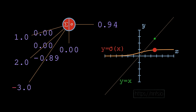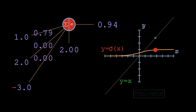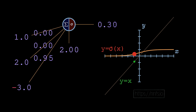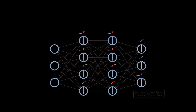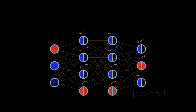Why does granularity matter? The next steps are to calculate loss — how wrong is the neural network — and then use an optimizer to adjust weights and biases to decrease that loss. With a step function we don't know how close we were to flipping between 0 and 1, so the optimizer can't work effectively. A sigmoid's granular output makes it more reliable for training.